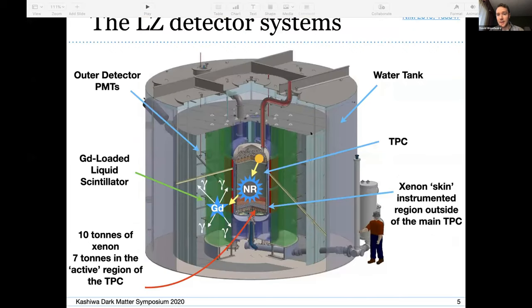And this is a model of the full LZ detector systems. We have that central TPC which I showed on the previous slide. That's in the middle, that's the heart of our detector where we look for dark matter. That sits inside of a cryostat vessel. We need a cryostat vessel to keep the detector cold to maintain the liquid xenon in the liquid phase. Because you have a TPC inside of a cryostat vessel, you have this region just outside of the TPC but inside of the cryostat filled with liquid xenon. For LZ we actually instrument that region and we call it the liquid xenon skin.